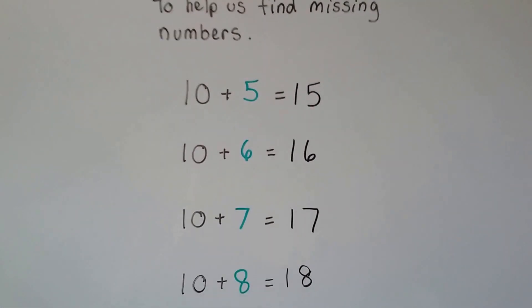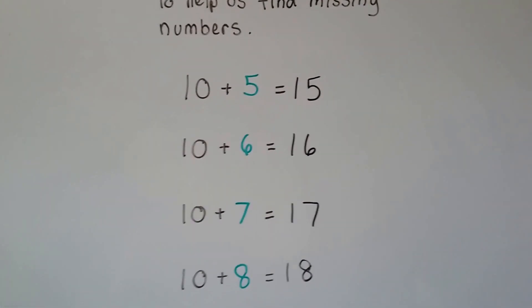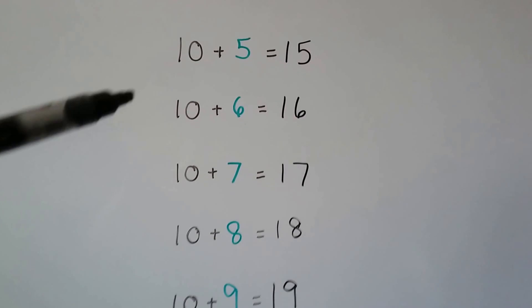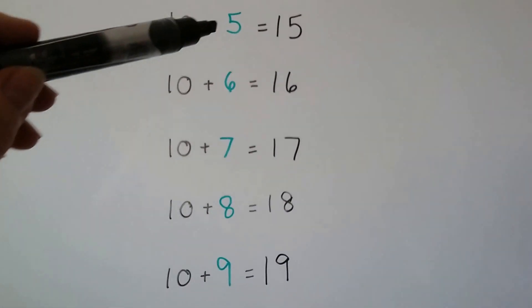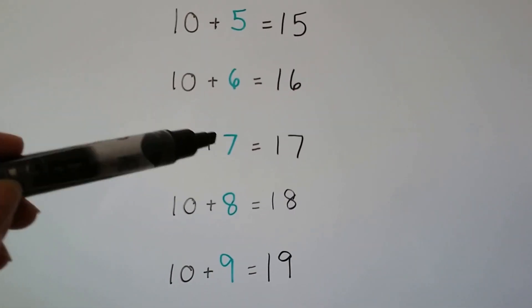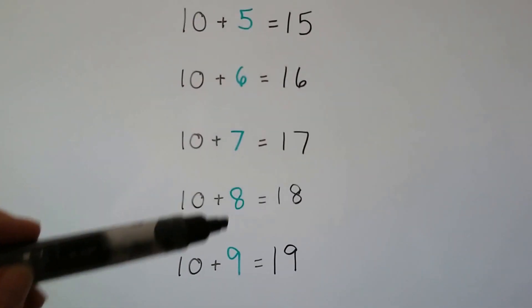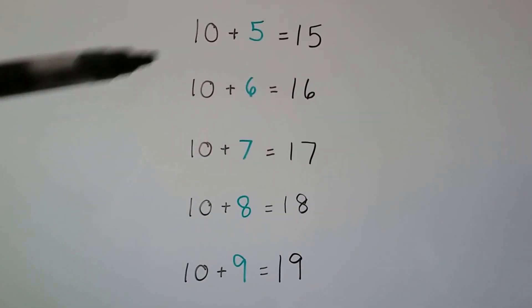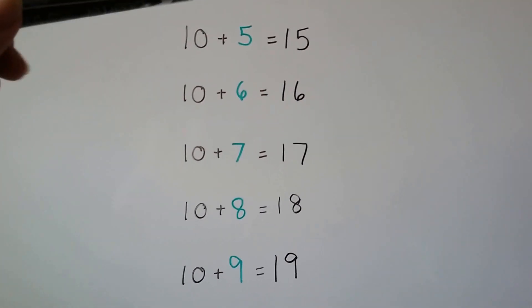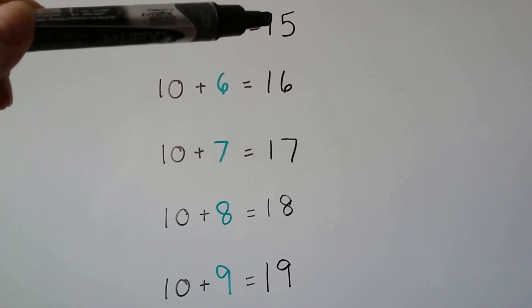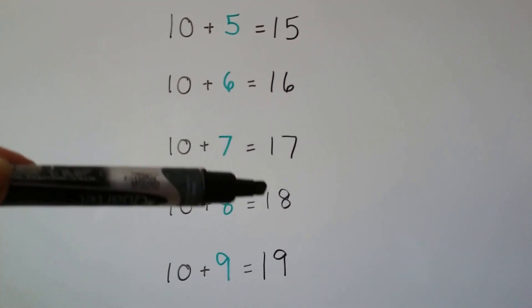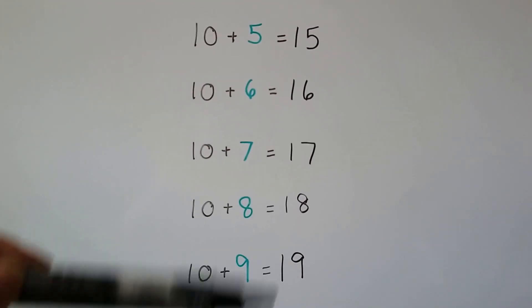Do you see how the numbers are going 5, 6, 7, 8, 9 and the sums are going 15, 16, 17, 18, 19?